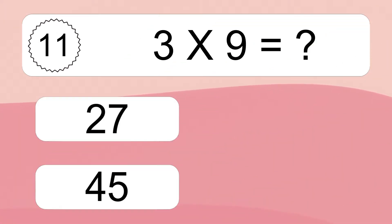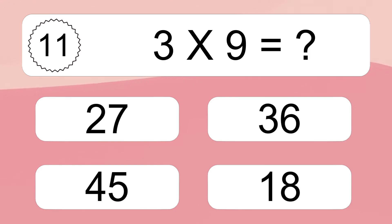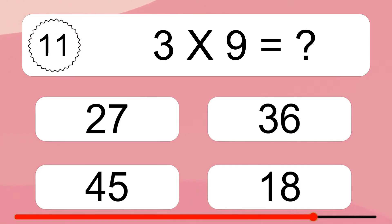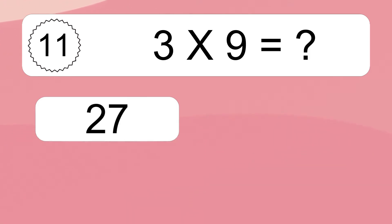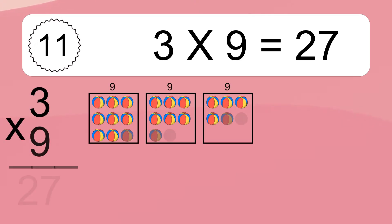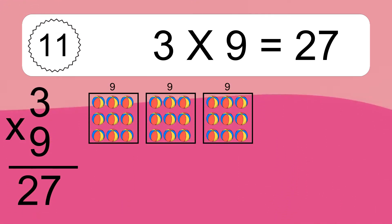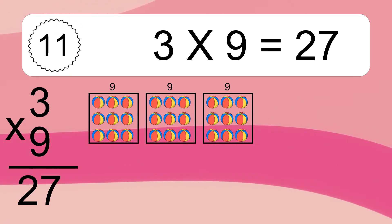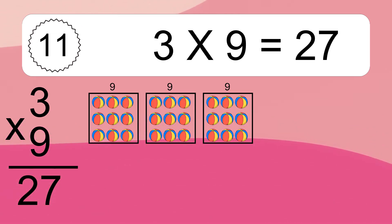Three times nine equals what? Three times nine equals 27. We have three boxes, and each box has nine colorful balls inside. If you count all the balls in all the boxes together, you will have three times nine balls. This equals 27 balls.